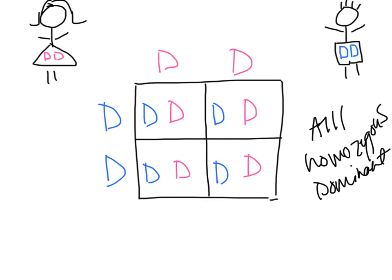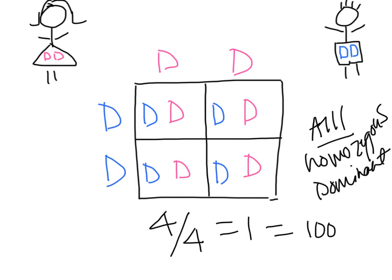If you wanted to do the math instead of just saying 'all,' how would we list this as a ratio? 4 out of 4, which equals 1, which also equals 100% — all the possible offspring. What are the odds that the offspring will be big D big D? 100%. What are the odds that the offspring will be heterozygous? Zero. What are the odds that the offspring will be homozygous recessive? Zero. There's no little d — you can't just pull little d out of nowhere. It's either in the gametes or it's not, and in this case with these parents, it's not.